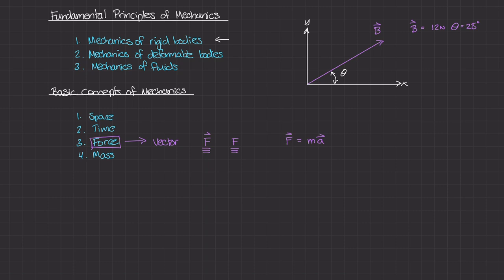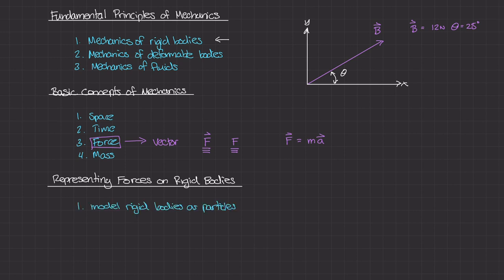How do we represent forces on rigid bodies? We are going to model rigid bodies as particles, and these particles are going to be placed at the center of mass. We'll get to calculating where the center of mass is, but for now, to keep things simple, anytime we have a rigid body with a bunch of forces acting on it, we'll represent the rigid body as a single point in space that we can apply all these forces to. We are not going to be concerned about the geometry of the mass bodies yet, but we will be a little later on.